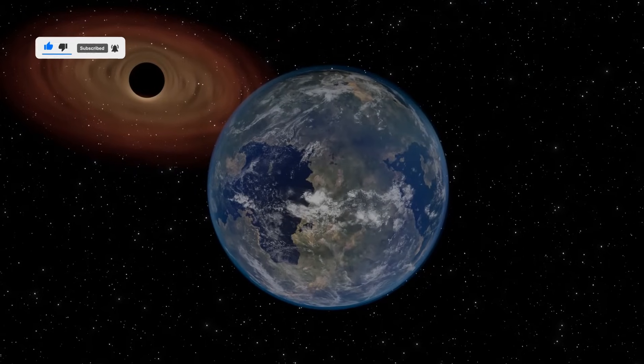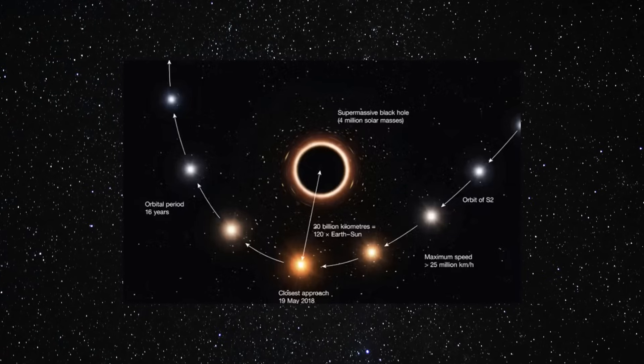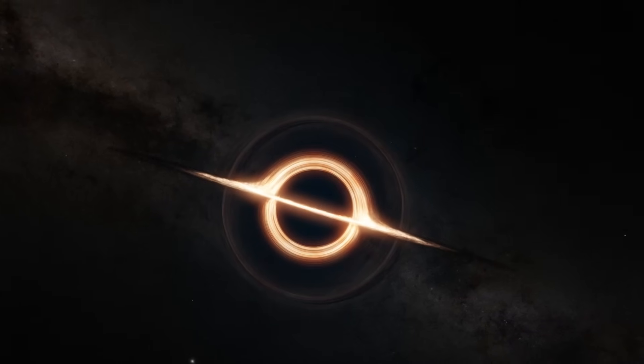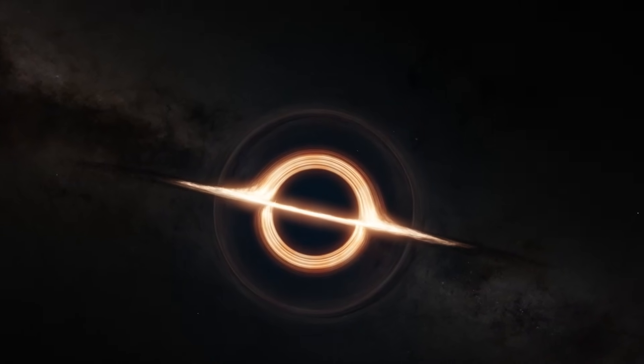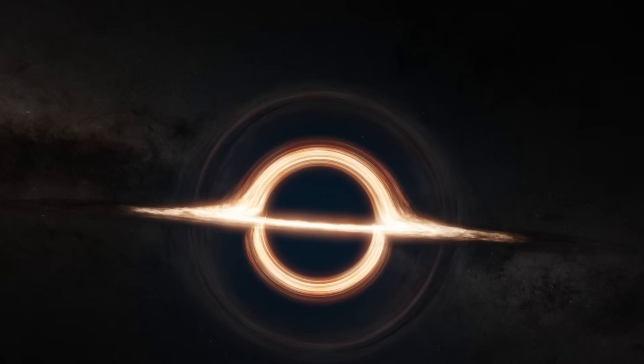Closer still, the sky bends. Stars twist into glowing arcs. Constellations stretch and double. The black hole itself looms like a dark circle, wrapped in fire. The photon sphere, where light itself orbits before vanishing.